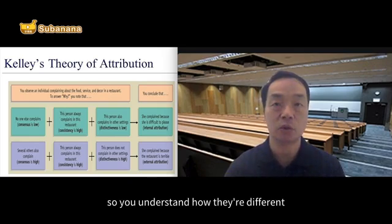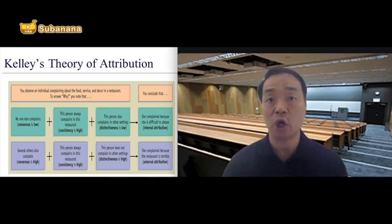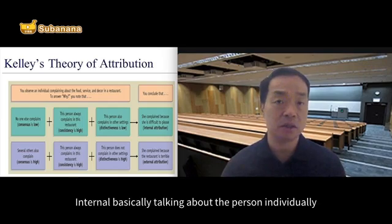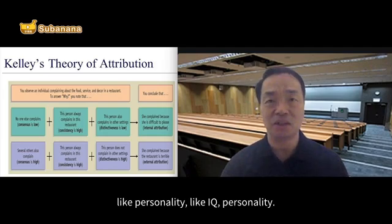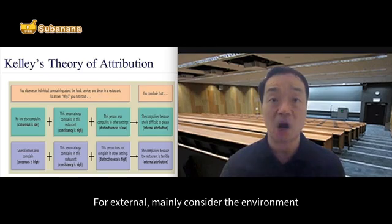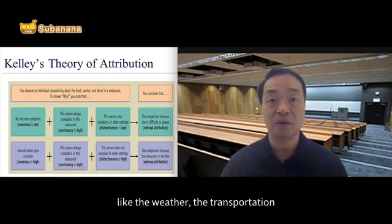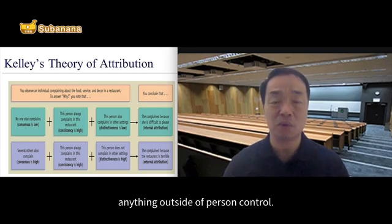So last video, video 9, you learned how to differentiate between internal and external attribution. Internal basically talks about the person individually, like personality and IQ. For external, we mainly consider the environment like the weather, the transportation, anything outside the person's control.